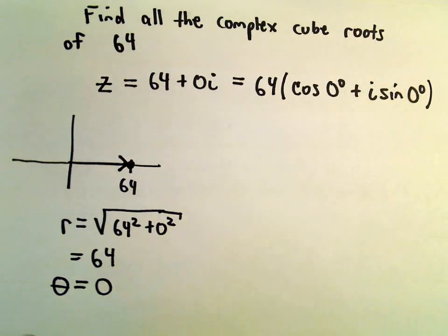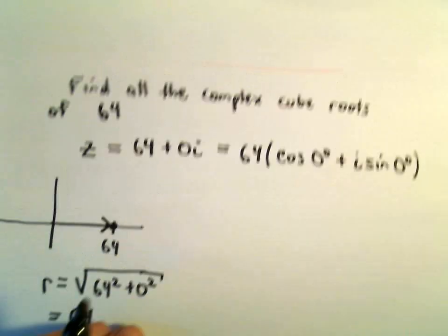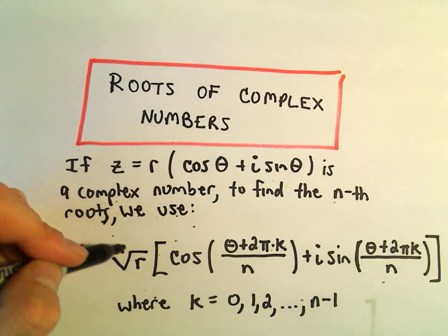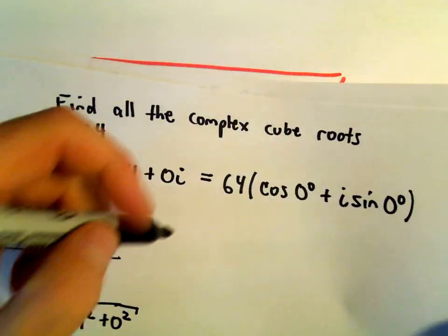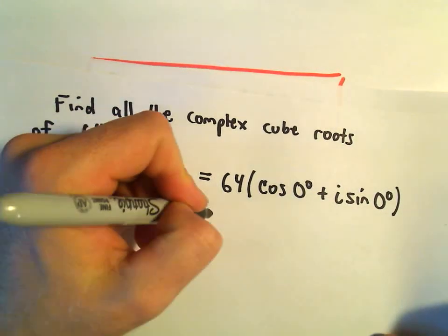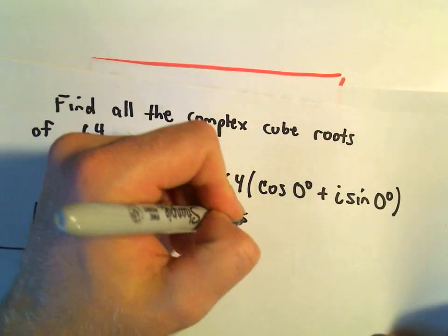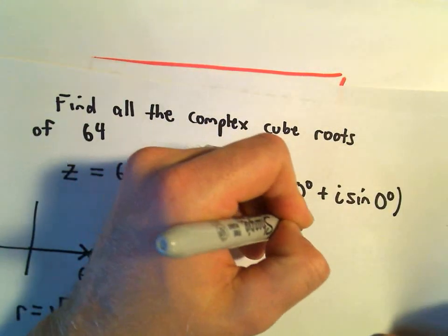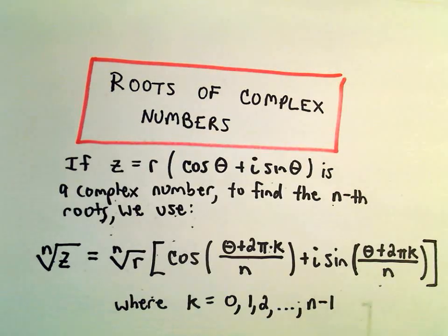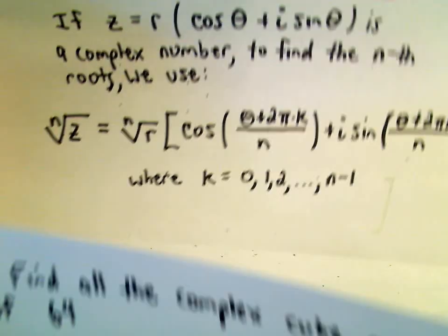Alright, well, if we want the cube roots, the cube roots will simply be taking, we'll be letting n equals 3. So for cube roots, our n value will equal 3. And it says to find the cube roots, we'll just fill in our formula here.